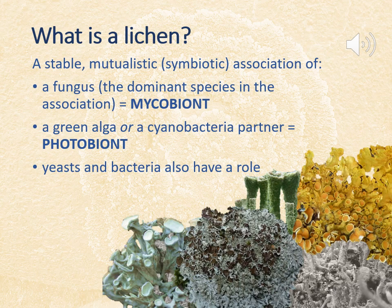So what is a lichen? It's a stable mutualistic association of two or more organisms — organisms that coexist in such a way that each benefits from one another. The association is made up of a fungus, called the mycobiont, which is the dominant species in the partnership, and a green alga or cyanobacteria, which are capable of photosynthesis and hence called the photobiont.